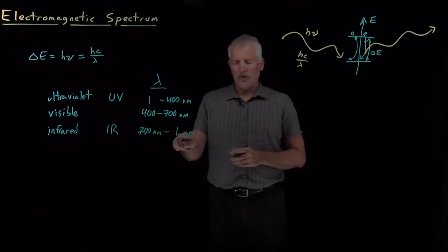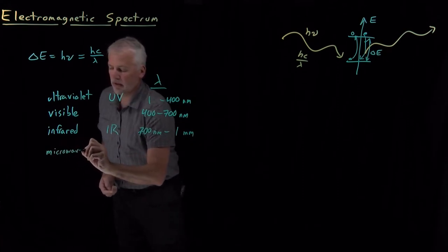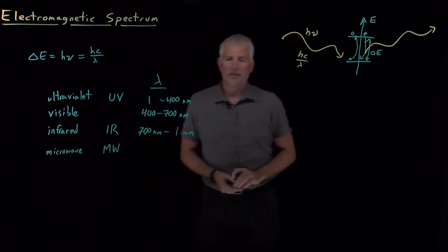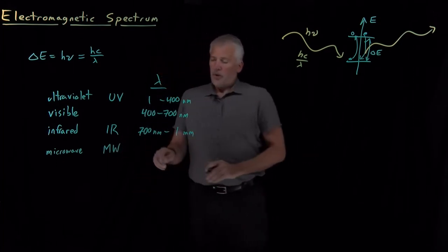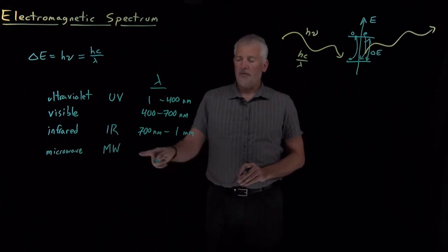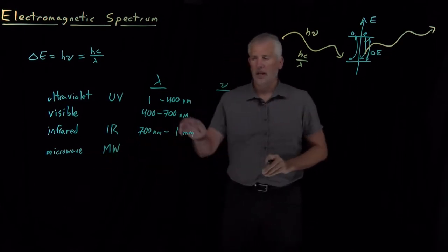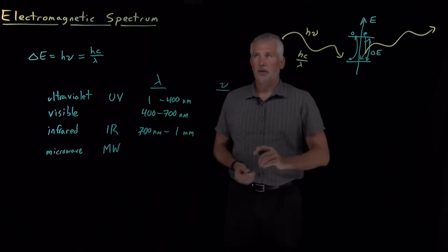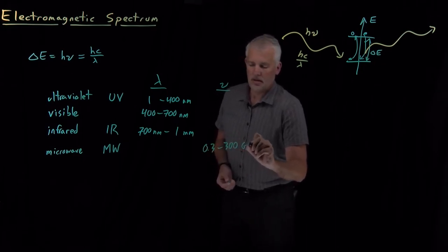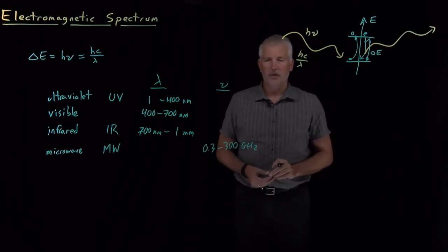At some fairly arbitrary boundary — roughly a millimeter or so — we get into a different named region of the electromagnetic spectrum that we call the microwave portion of the spectrum, abbreviated as MW. For various reasons, microwave photons are not very commonly referred to in terms of wavelength. We tend to more typically talk about the energies of these microwave photons in terms of their frequencies, which are somewhere in the range of low gigahertz up to hundreds of gigahertz.